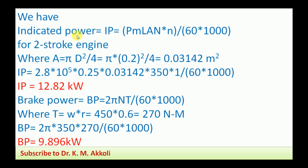Indicated power IP = (PM × L × A × n) / (60 × 1000), where PM is mean effective pressure, L is stroke length, A is cross-sectional area of the cylinder = π D² / 4, n is engine speed in rpm, N is number of cylinders. Dividing by 60 converts rpm to rps, and dividing by 1000 gives power in kilowatts. This formula applies to a two-stroke engine.